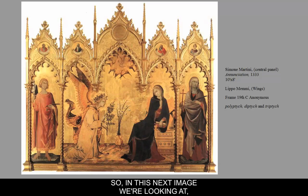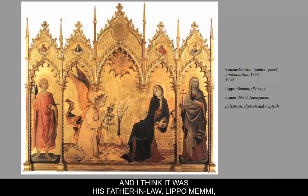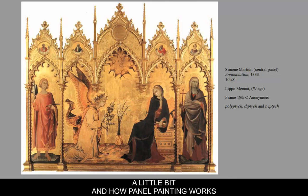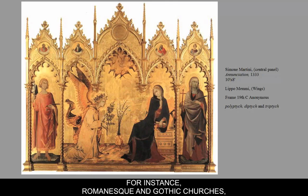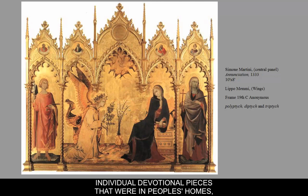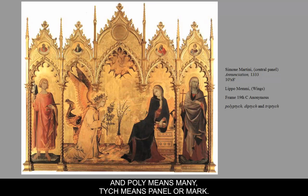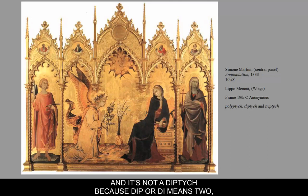This next image is a triptych by Simone Martini. Martini painted the center panel, and his father-in-law Lippo Memi painted the wings — the two figures on either side. Let's discuss panel painting and how it works. Usually in Renaissance and medieval churches they might have a screen or panel. This is probably made for a church and made up of multiple panels. 'Poly' means many, 'tych' means panel — so a polyptych means many panels. This is a triptych because it has three panels. The frame is actually a 19th-century frame — we don't know who made it, but it looks Gothic.